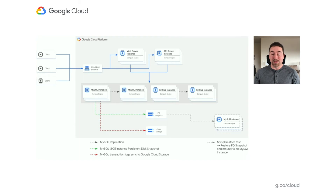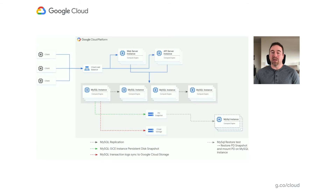Moving to the back-end is where things get complicated. We run a traditional OLTP workload, and all the data that buyers and sellers generate and interact with is stored in MySQL. From a DR point of view, we primarily rely on MySQL native replication for multiple copies of data. We execute periodic snapshots of our data, and for each one we run a restore test process to validate it. For transaction logs, we sync those to Google Cloud Storage buckets on a scheduled basis.